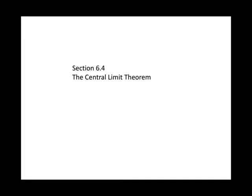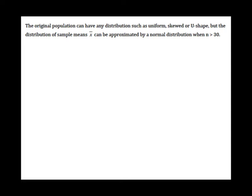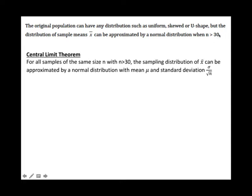In Section 6.2 we learned how to find the probability when one sample is randomly selected, and the original population has to be normally distributed. In this session, we want to know how to deal with cases where the sample size is greater than 1 and the original population is not normally distributed. The original population can have any distribution such as uniform, skewed, or U-shape. If we want to deal with this kind of distribution, the sample size has to be greater than 30, and this is called the Central Limit Theorem.